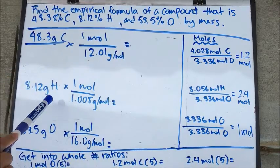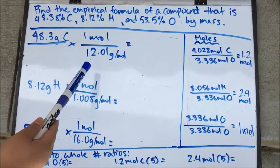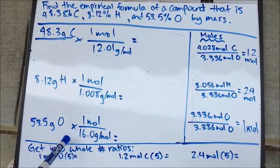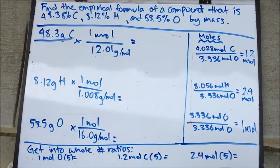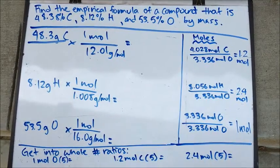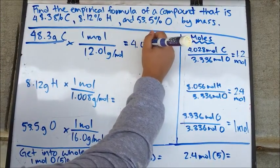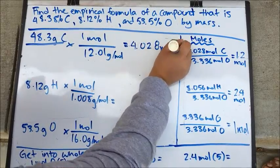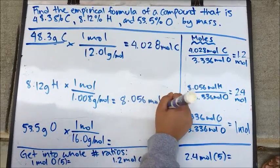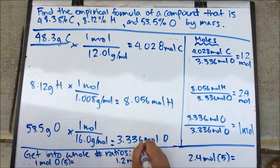For carbon, hydrogen, and oxygen respectively, divide them by the molar mass. For carbon it's 12.01 grams per mole, for hydrogen it's 1.008 grams per mole, and for oxygen it's 16.0 grams per mole. After converting these all into moles, you get 4.028 moles of carbon, 8.056 moles of hydrogen, and 3.336 moles of oxygen.